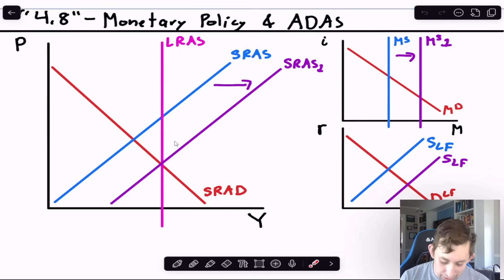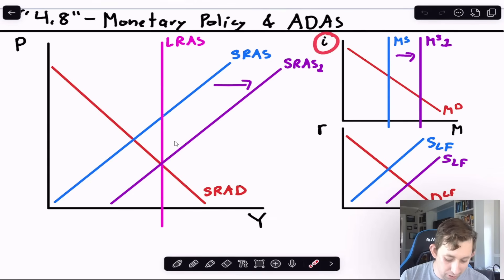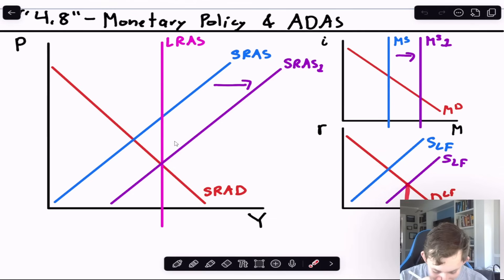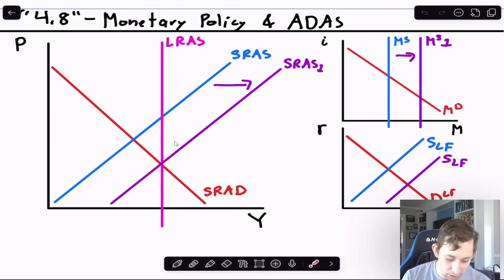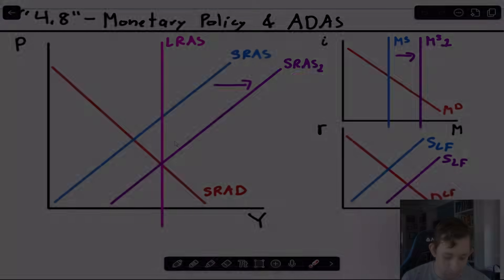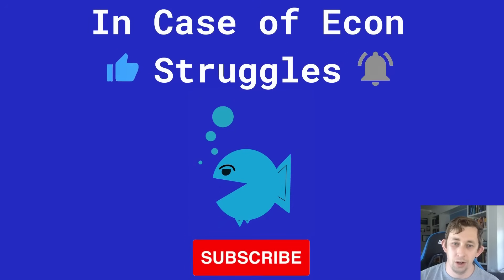With a falling interest rate and rising money supply, fewer people want to keep money in the bank, so the supply of loanable funds decreases and the real interest rate also falls. There's higher demand and higher supply of loanable funds as the Fed increased the money supply. That's a quick example of how monetary policy interacts with the AD/AS model, the money market, and the loanable funds market.